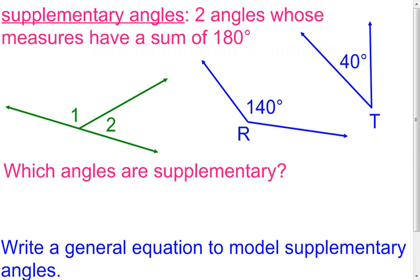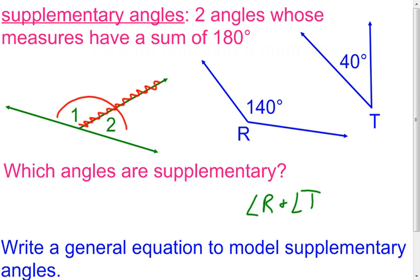Supplementary angles are very similar to complementary, however the two measures now have to add up to 180 degrees. Looking at the picture: angle R and angle T — add them together and it's 180 degrees, so angle R and angle T are supplementary. For angle one and angle two, if I look at just those two angles I have a straight angle, and a straight angle measures 180 degrees. Therefore angle one and angle two together are supplementary — another example even without the actual measures of the two angles.